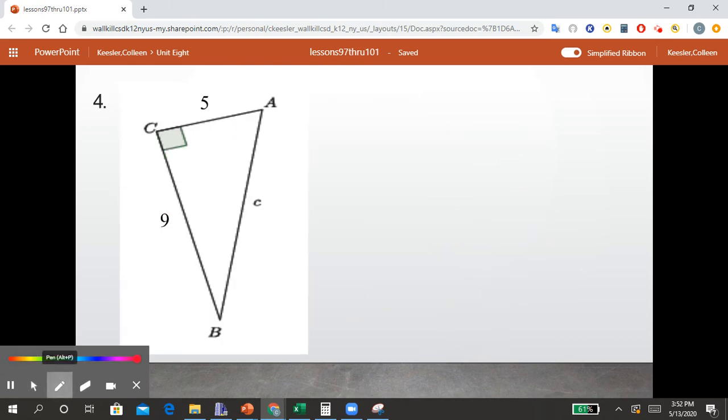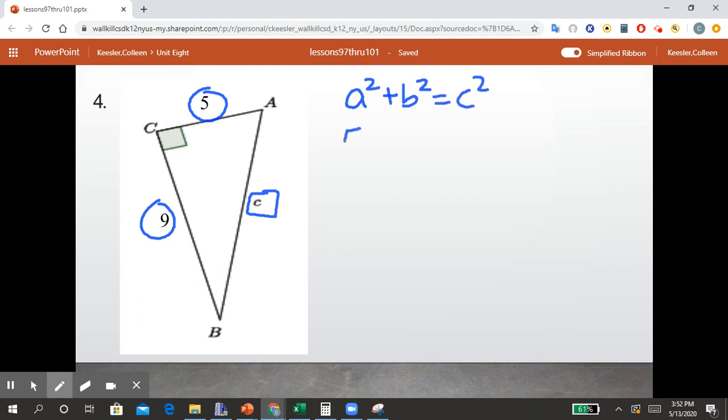Number four. Okay, so here we have legs of 5 and 9, and again, a missing hypotenuse. So again, we start by recording our formula, then plugging in the legs smallest first.